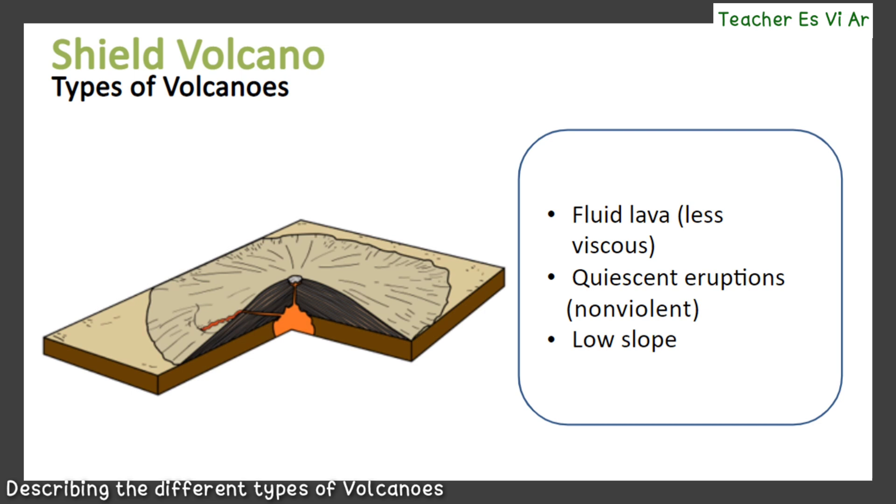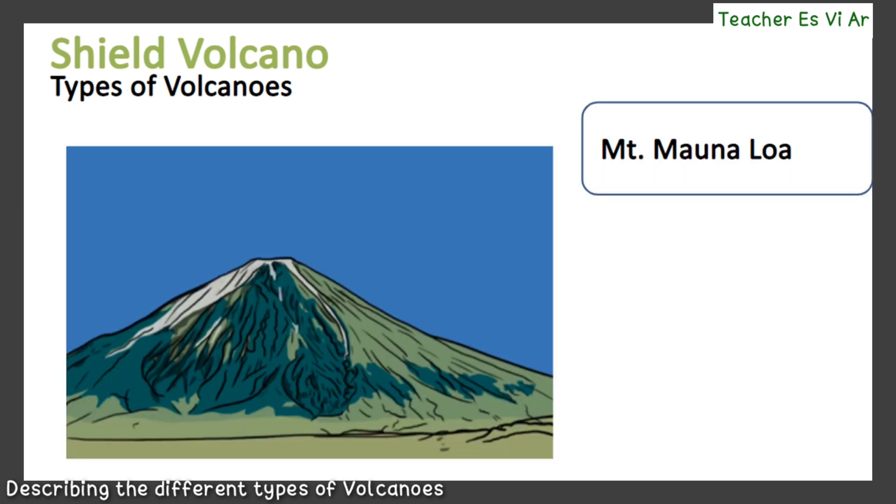The slope of a shield volcano is less than 10 degrees in angle. An example of a shield volcano is Mount Mauna Loa. Mount Mauna Loa is one of five volcanoes that form the island of Hawaii in the U.S. state of Hawaii in the Pacific Ocean. Mauna Loa has historically been considered the largest volcano on earth.